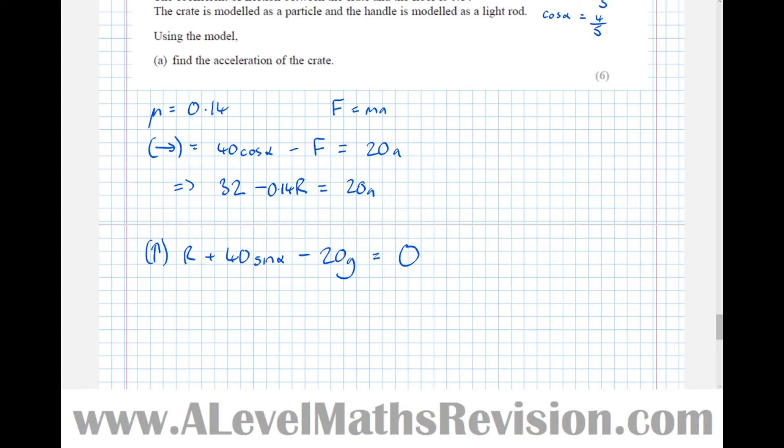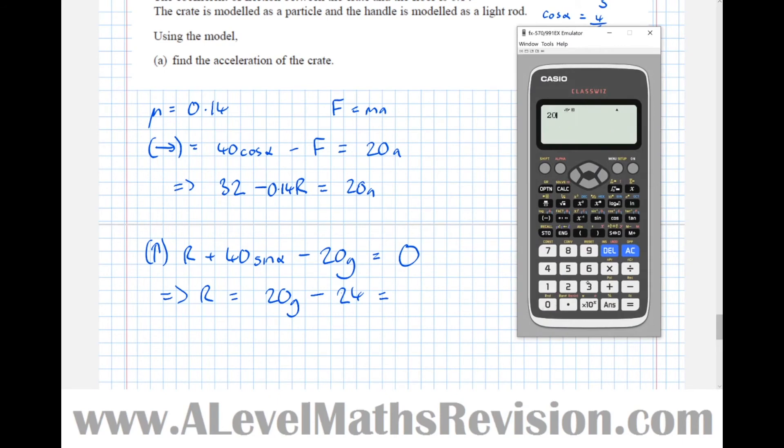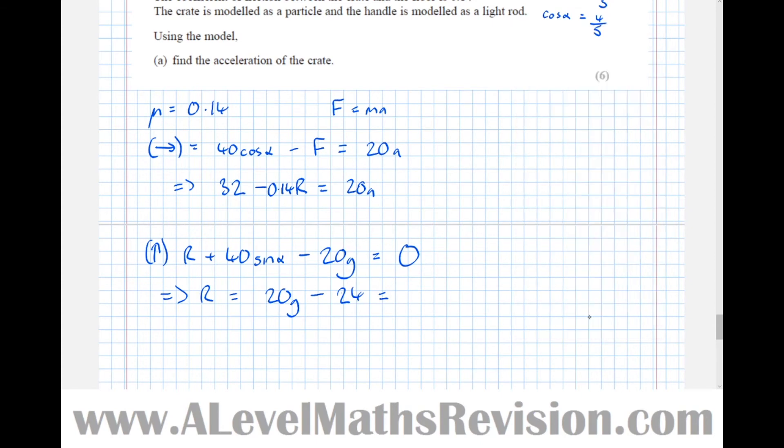So therefore we can find out what R is. So R equals 20 G take and sin alpha was three fifths. So three fifths of 40 is 24. So 20 G take 24 which is equal to and let's find on the calculator. So 20 G take 24 is 172. So R is 172.